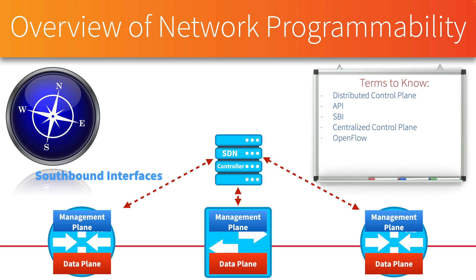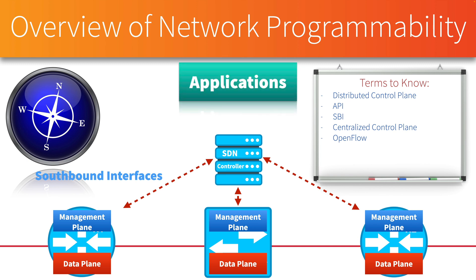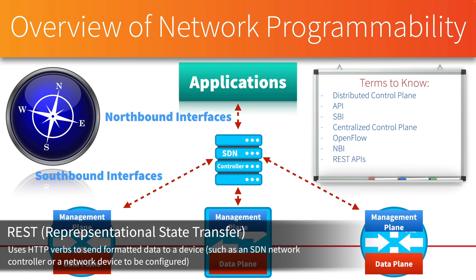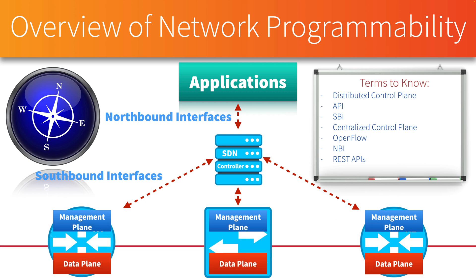One of the big industry-standard southbound APIs is called OpenFlow. These SBIs are how the SDN controller sends out configuration instructions or makes queries about the configuration of a device. But we talked about intent-based networking — how do we express our intent to the SDN controller? That's going to be done through an application, and we typically represent applications as being above or north of the SDN controller. So these are NBIs — northbound APIs. Here we're often using something called REST APIs. REST stands for Representational State Transfer, and this is very similar to going out to a website and asking for a webpage using HTTP verbs like POST or GET.